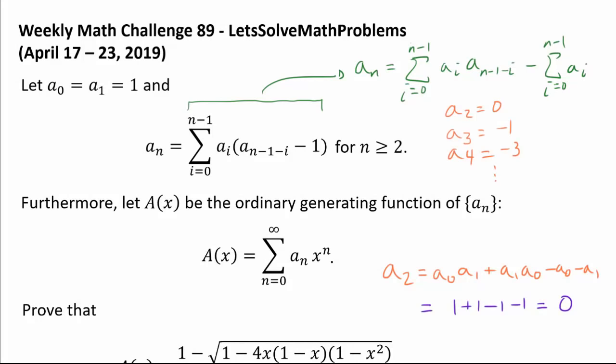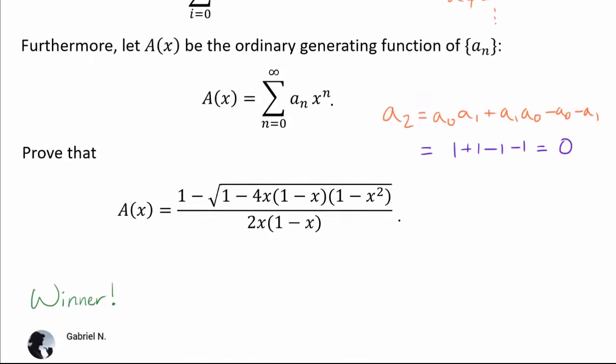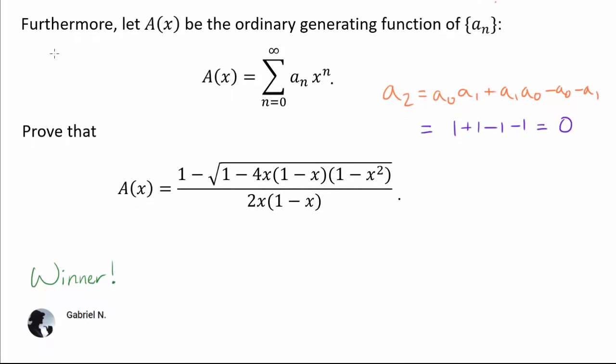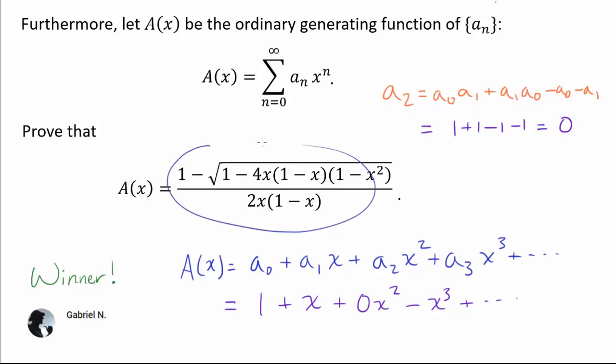So I think we understand this recurrence relation now. Now let's actually get to the crux of the problem, which is the generating function corresponding to this sequence. So we're going to let A(x) be the ordinary generating function of a_n, which is defined to be this sum from n equals 0 to infinity of a_n times x^n. And if you expand this out, you see that A(x) is a₀ times x to the 0 power plus a₁x plus a₂x² plus a₃x³ and so on. So our A(x) in our case is a₀ is 1, a₁ is 1, a₂ is 0, a₃ is negative 1, and you just continue associating each power of x with the respective coefficients.